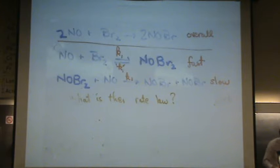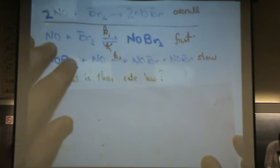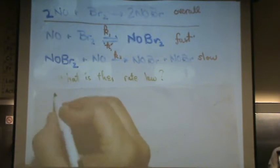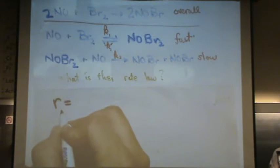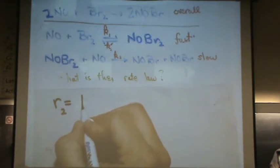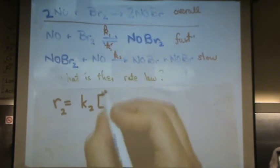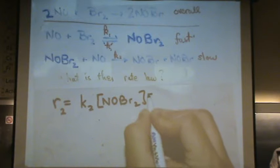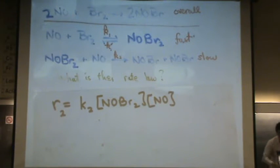Now, how do you solve this? Remember the rate is determined by the slow step. So let's write that. Rate, and specifically it's rate 2, it's the second reaction, is K2 times all the reactants, NOBr2 times NO. That, in a sense, is my answer, but there's a major problem here.